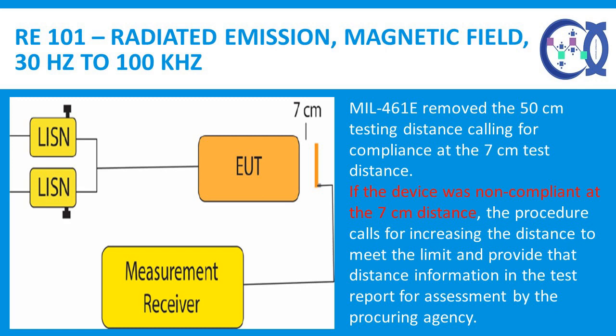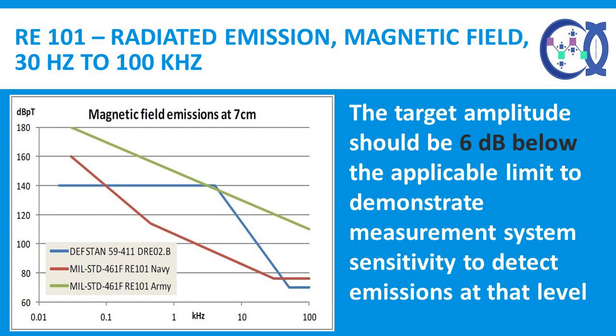MIL-461E removed the 50 cm testing distance, calling for compliance at the 7 cm test distance. MIL-461F added a distance measurement to the RE-101 test method: if the device was non-compliant at the 7 cm distance, the procedure calls for increasing the distance to meet the limit and providing that distance information in the test report for assessment by the procuring agency. RE-101 testing begins with signal integrity verification, where we check the measurement system by creating a known signal frequency and amplitude, with the target amplitude 6 dB below the applicable limit to demonstrate measurement system sensitivity.